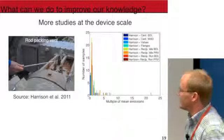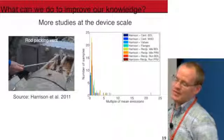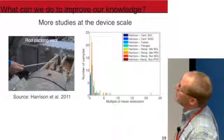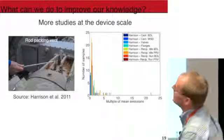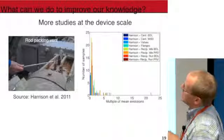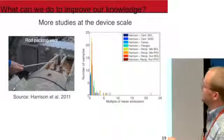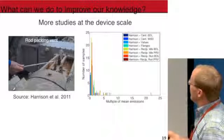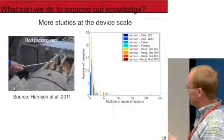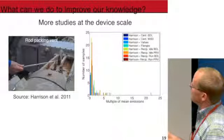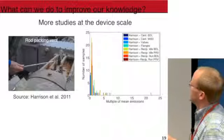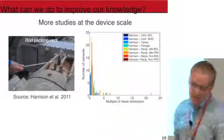So I can talk about what we might do to improve our knowledge. From the device level, there are kind of two levels at which people study leakage — they study leakage at devices and they study leakage from the air, called top-down and bottom-up. Here's a guy sampling what's called a rod packing vent — a vent on basically the packing around the cylinder shaft in a reciprocating compressor to prevent gas leakage. There's a vent there because some gas is always going to slip by. This is from a University of Texas study funded by EPA. These emission sources appear to be very heterogeneous — some are way out at 25 times the mean. This doesn't look like a normal distribution; it looks like a skewed distribution.